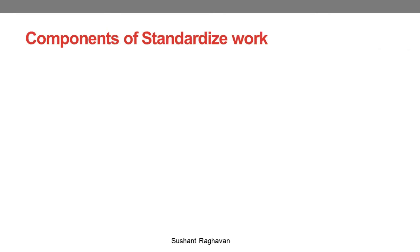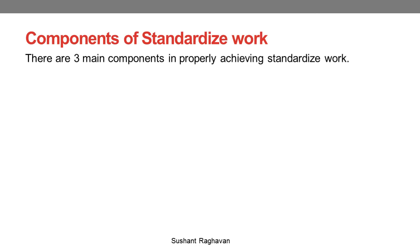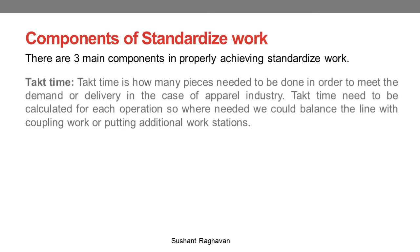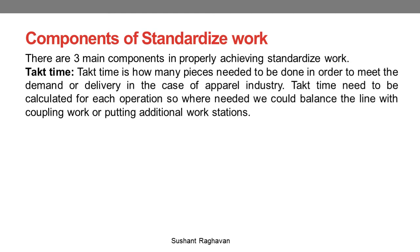There are three main components in properly achieving standardized work. The first is Takt time. Takt time is how many pieces need to be done in order to meet the demand or delivery, in the case of the apparel industry. Takt time needs to be calculated for each operation so that where needed, we could balance the line by coupling work or putting in additional workstations.